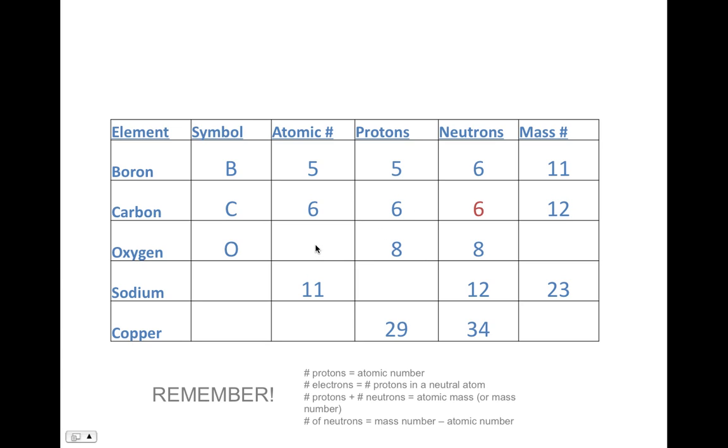Let's move on to oxygen. My atomic number is going to be equal to my number of protons. So right here I've got eight protons, which means my atomic number is eight. Now to figure out my mass number, we're going to take this formula right here. My mass number is equal to my protons and my neutrons. So I'm going to add up both my protons and my neutrons, and I get 16.